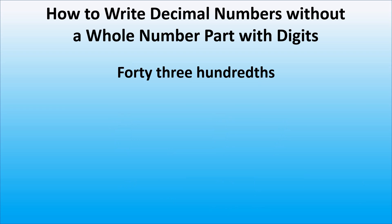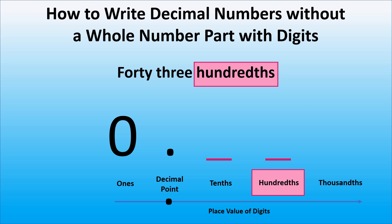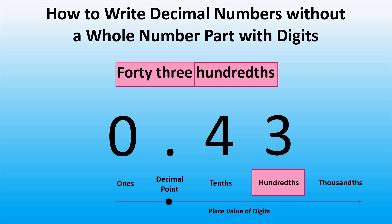Now let's look at forty-three hundredths. As there is no whole number part, we will write zero followed by the decimal point. Hundredths means that we need to have two digits to the right of the decimal point. Here we have forty-three, so we will write the digit three in the hundredth place and the digit four in the tenth place.